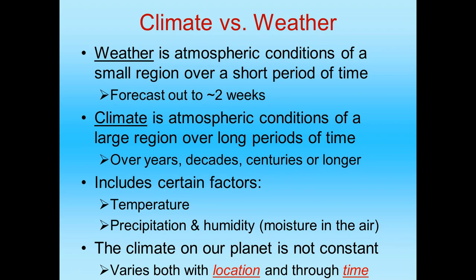Weather is what the atmosphere is doing over a small region over a short period of time. Weather can change from minute to minute, hour to hour, day to day, week to week — it's a short-term phenomenon. Right now, today's weather is sunny and hot — short-term phenomenon over a small area.